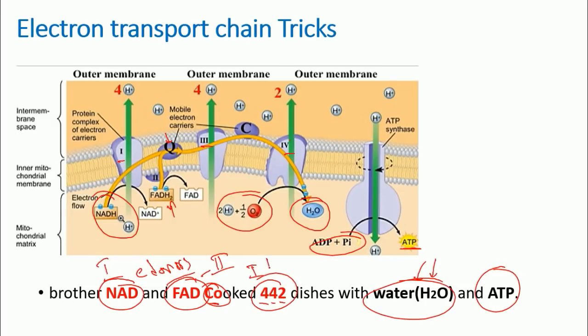So this movement of protons is something like 4-4-2. That's why I wrote this down: four protons in complex one, four protons in complex three, and two protons in complex four. There is no transfer of protons in complex two. That's really not a genuine complex in there.